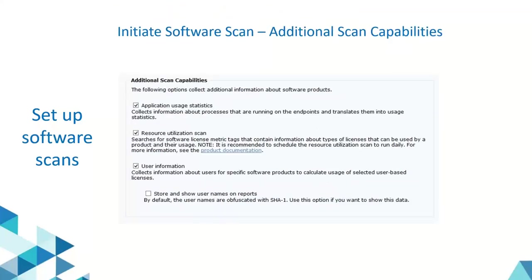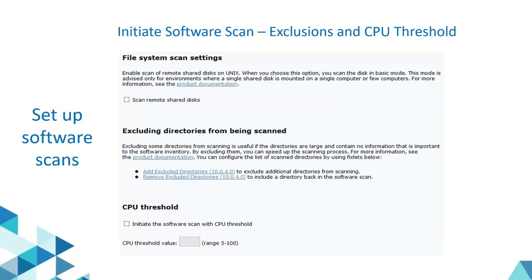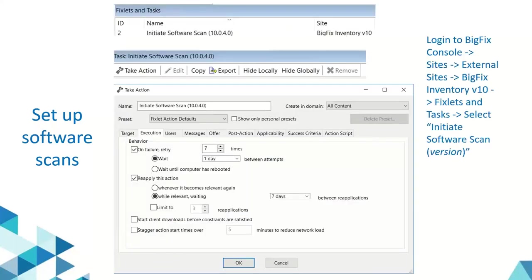This fixlet also provides additional scan capabilities that are listed on screen, which you can choose based on your requirement. For example, if you are running a software scan on some of your critical servers and you don't want the scan process to consume too much CPU, you can specify a CPU threshold here. Please note the value will fluctuate around the specified CPU threshold — this is the expected behavior. The scan is weekly by default, but you can customize it based on your requirement.